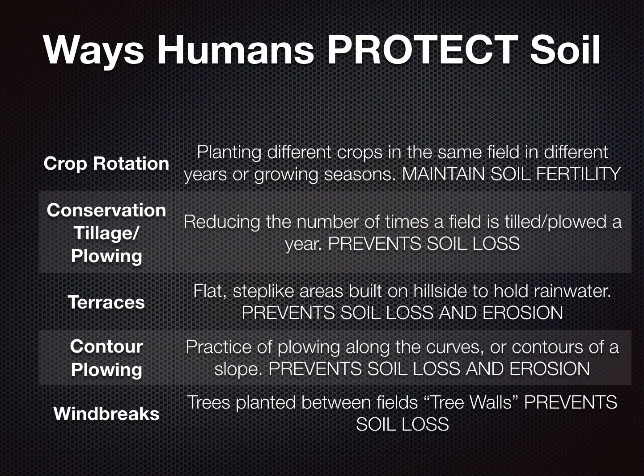Conservation tillage, or plowing, means less tilling or plowing. This is reducing the amount of times you plow a year, which helps prevent soil loss. You saw that soil loss was in all three ways of harming soil — this helps prevent it.